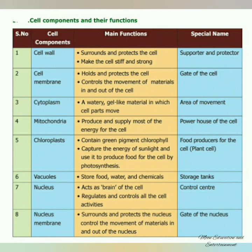Chloroplast: Contains the green pigment chlorophyll and captures energy from sunlight to produce food for the cell through photosynthesis — special name: 'food producer for the cell.' Vacuoles: Usually seen in plants and in small quantities in animals; they store food, water, and chemicals — special name: 'storage tanks.' Nucleus: Acts as the brain of the cell, controlling and regulating cell activities — special name: 'control center.' Nuclear Membrane: Surrounds and protects the nucleus and controls the movement of materials in and out of the nucleus — special name: 'gate of the nucleus.'